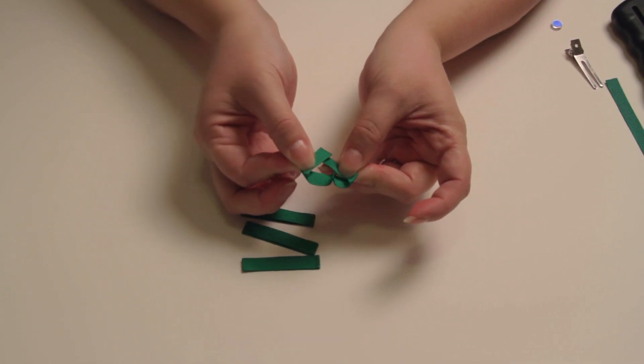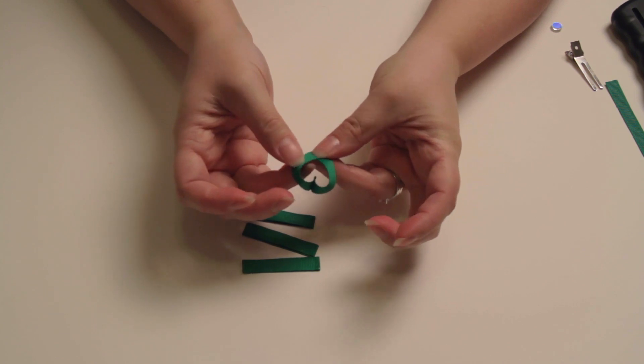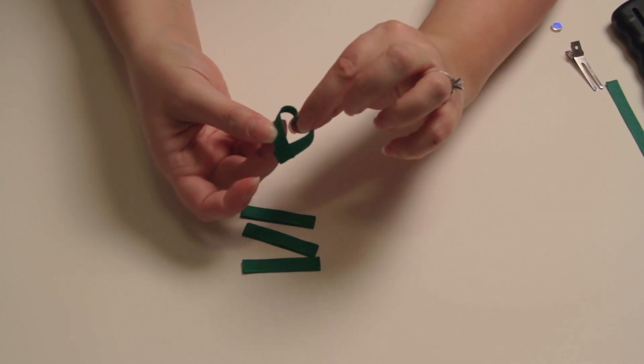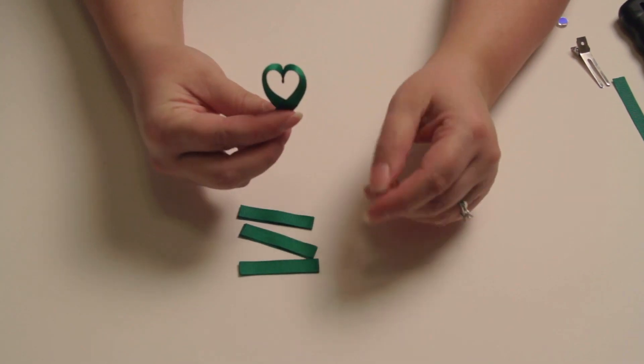And you want to wrap it around and put the ends together so that it's making the shape of a heart. You want to do this to three of your four pieces.